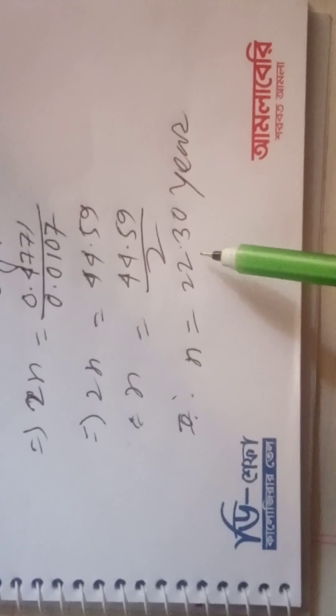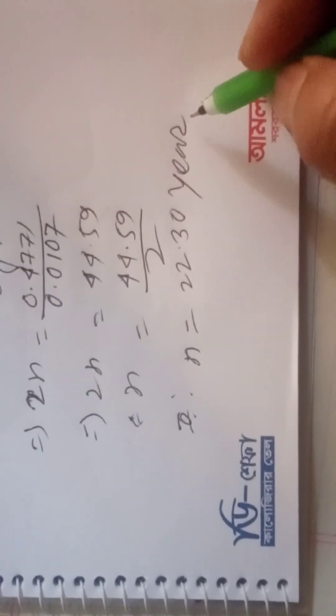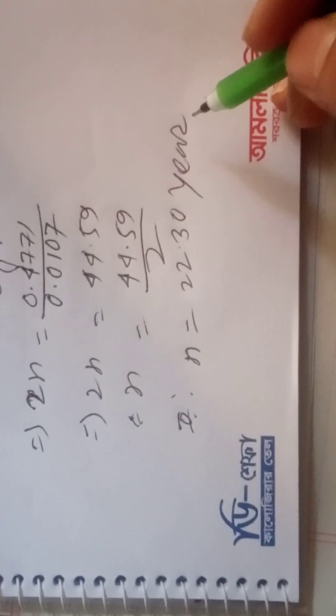It will be needed 22.3 years for half-yearly 5% interest to make money triple, or three times.